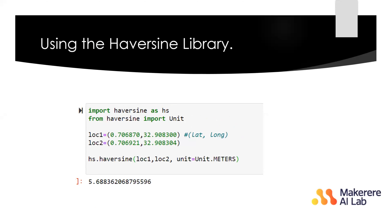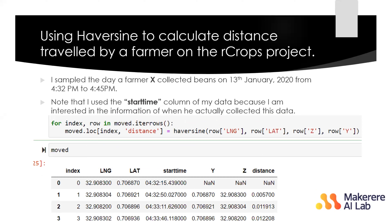On the next slide, you can see how one farmer traveled on a specific day from one time to another. Just as I said about Haversine, it calculates the total distance by computing consecutive point-to-point distances. The longitude and latitude points keep changing, and each new starting point becomes the previous point. So from one point to another, that distance is added, and the previous point becomes the new starting point — that's how Haversine calculates its total distance.